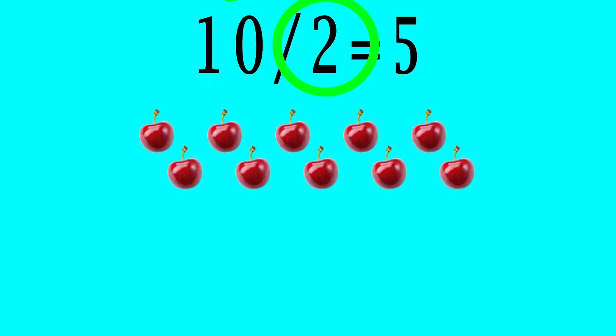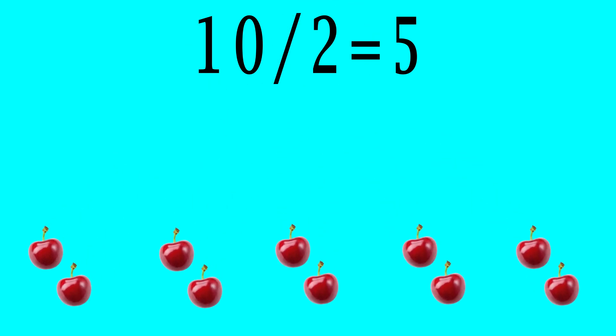Likewise, the equation 10 divided by 2 equals 5 is saying that we have 10 cherries and we put 2 on each plate, then we'll have 5 plates.